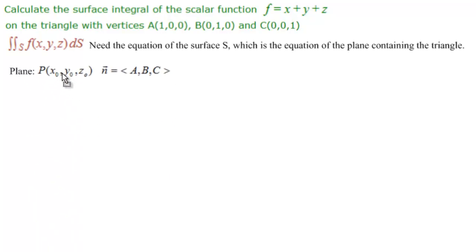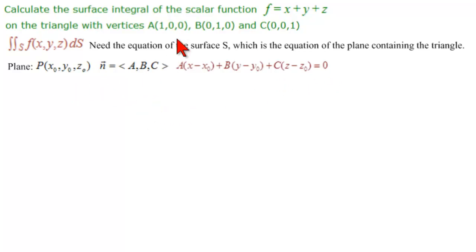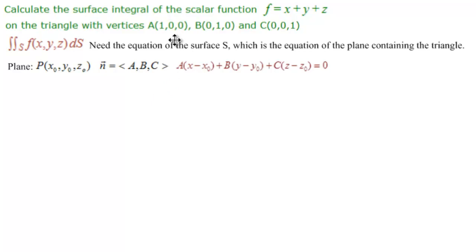The standard form says we need a point and a normal vector. We have three points and no normal. But we know that the vector AB lies on the plane, and the vector AC lies on the plane. So the vector product of AB and AC must be a vector normal to the plane. We're going to find the directional vectors of AB and AC and calculate the vector product to get N.